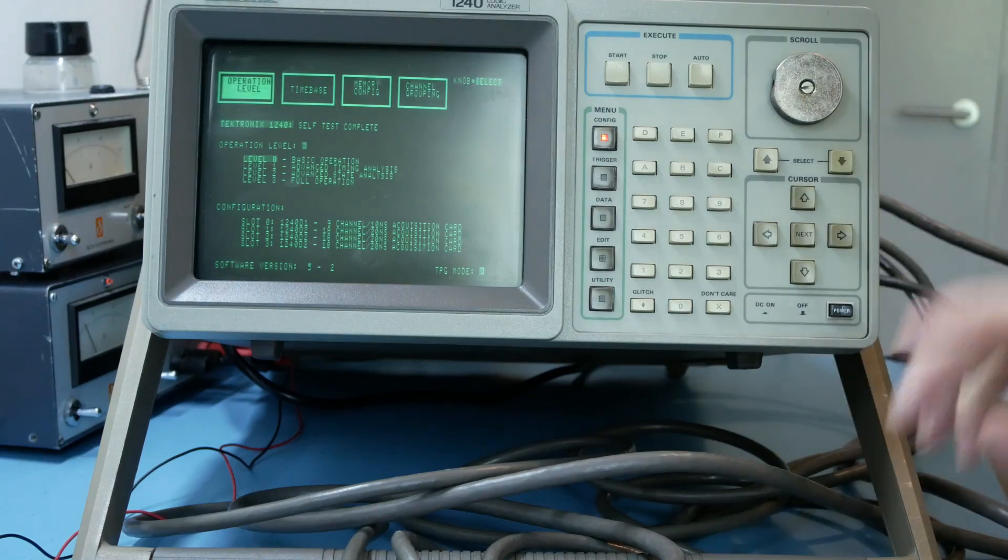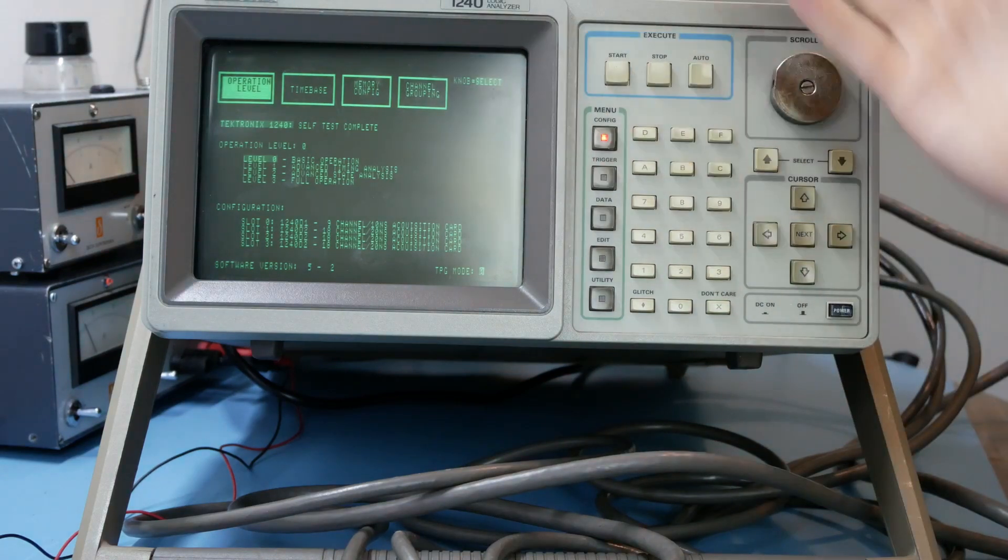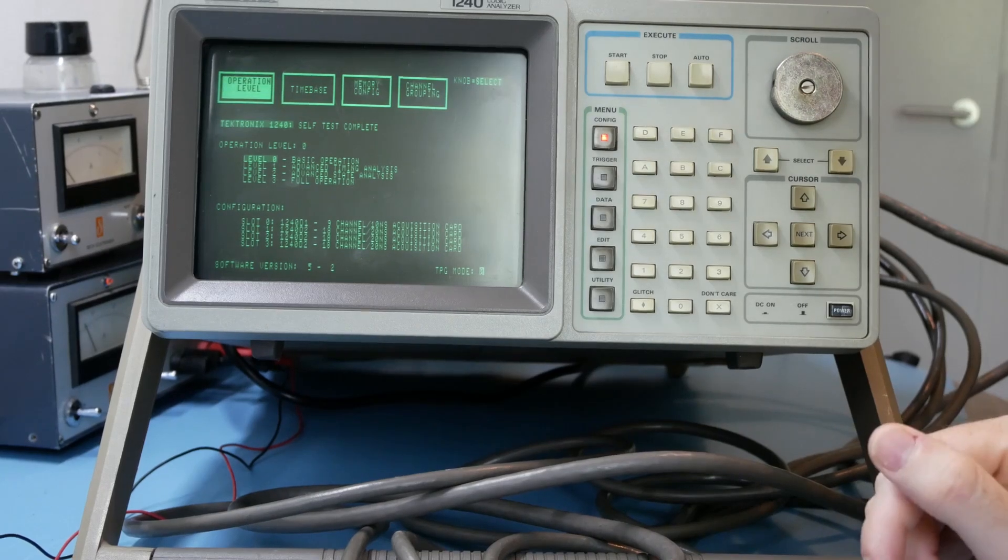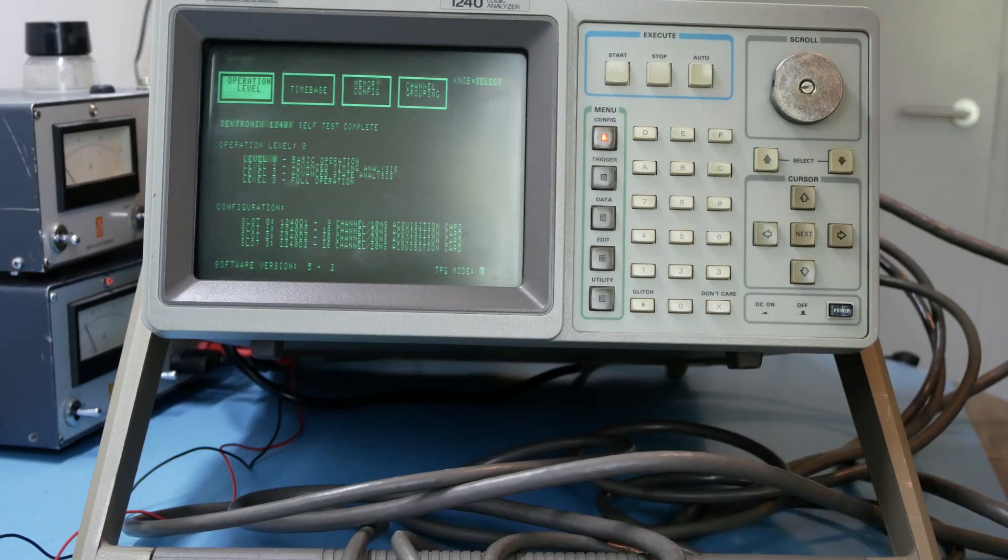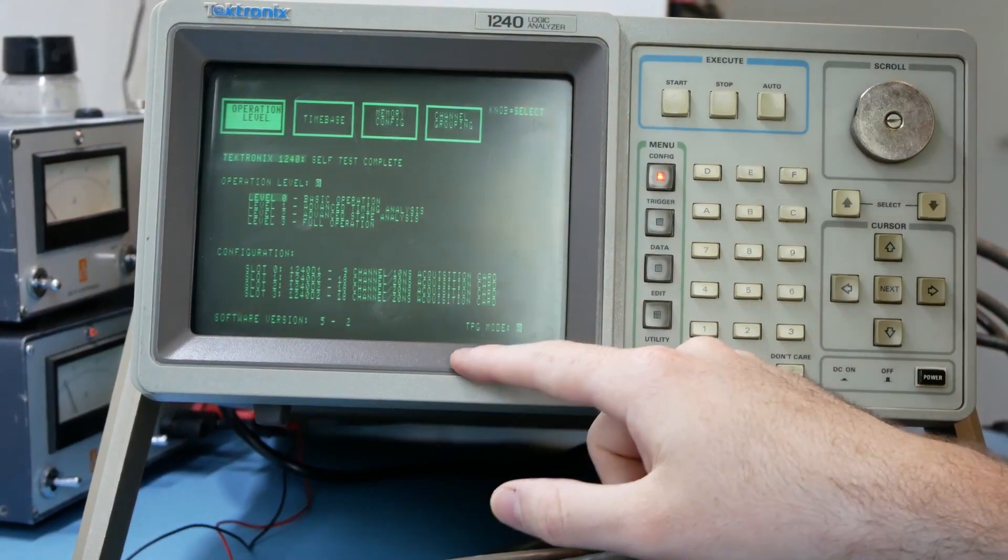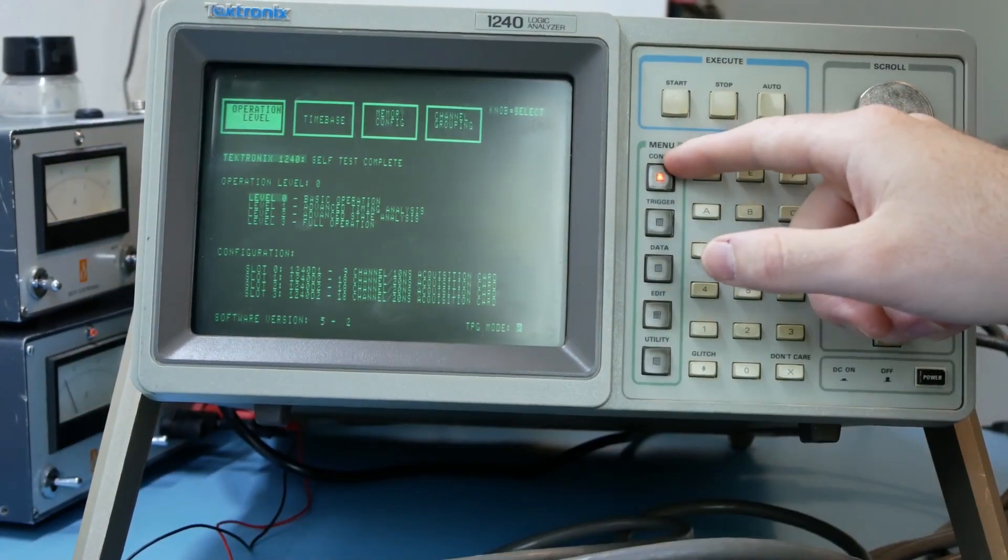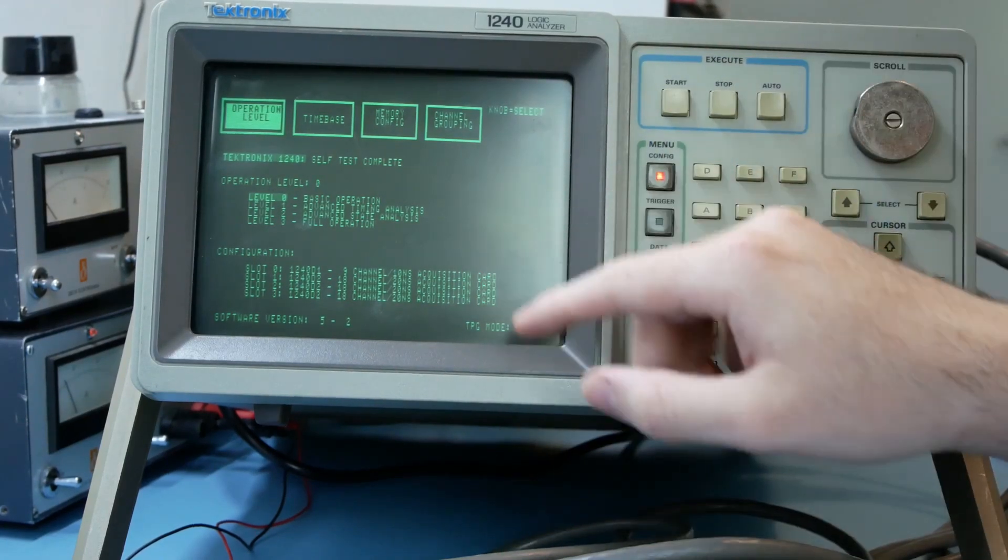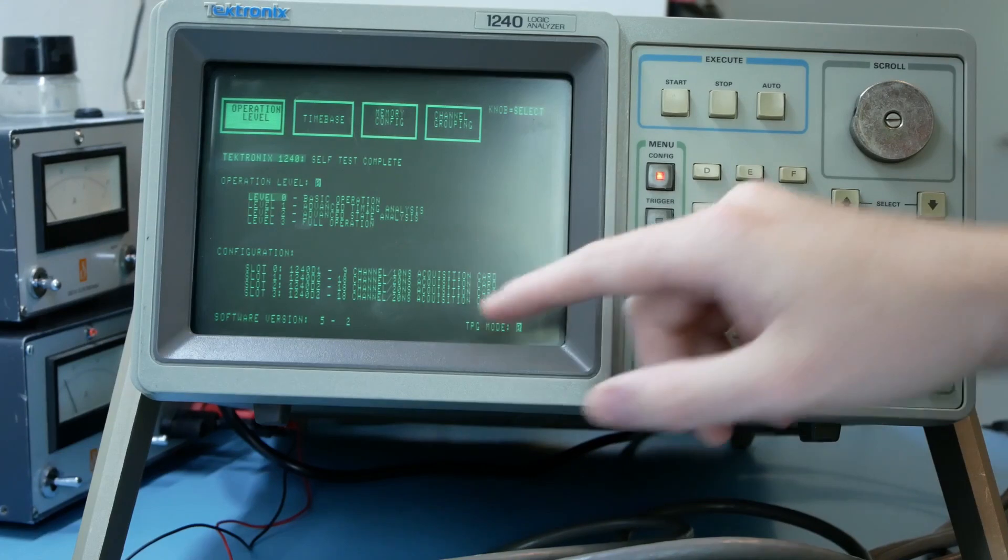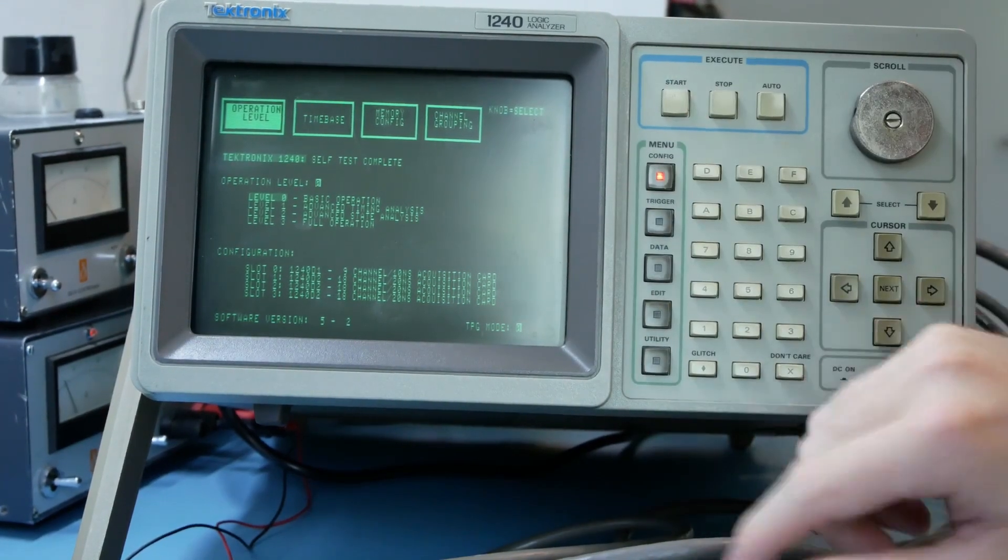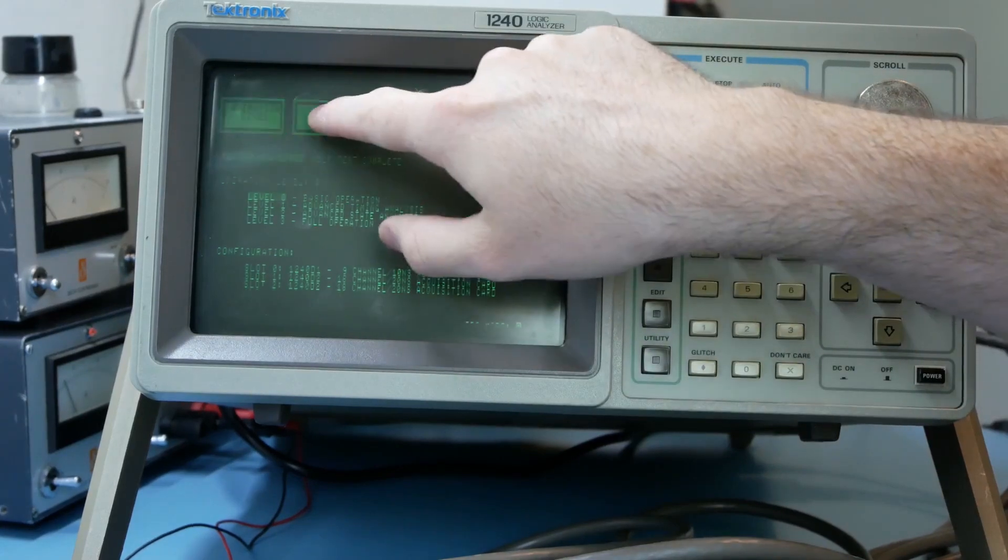Now let's set up this logic analyzer to debug that 6502. We're in the config menu now which is used to set everything up. The operation level you can select how complex you want this instrument to be, from basic operation up until full operation. But for now basic is more than advanced enough already.